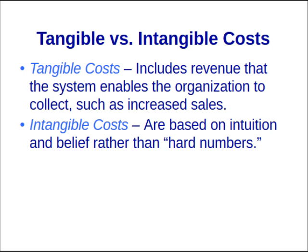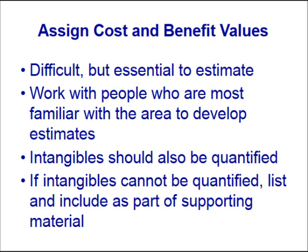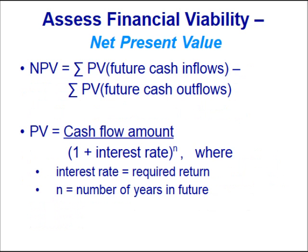Tangible costs and benefits include revenue the system enables the organization to collect, such as increased sales. Intangible costs are based on intuition and belief rather than hard numbers. Assigning cost and benefit values is difficult but essential to estimate. Work with people most familiar with the area to develop estimates. Intangibles should be quantified; if they cannot be quantified, list and include them as part of supporting material.